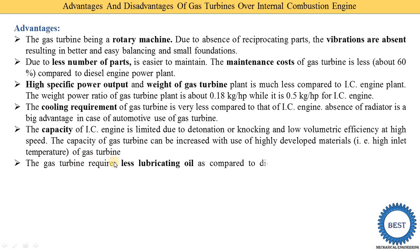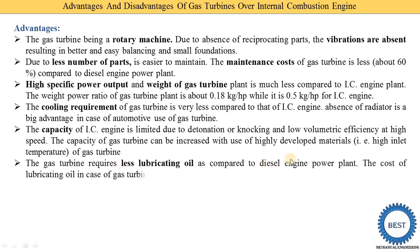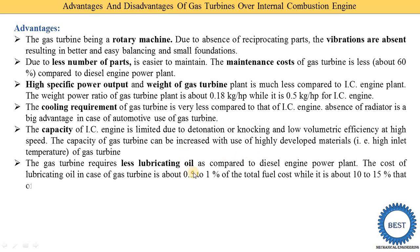The gas turbine requires less lubricating oil compared to a diesel engine power plant. The cost of lubricating oil for a gas turbine is about 0.5 to 1% of the total fuel cost, while for diesel engines it is about 10 to 15% of the fuel cost.